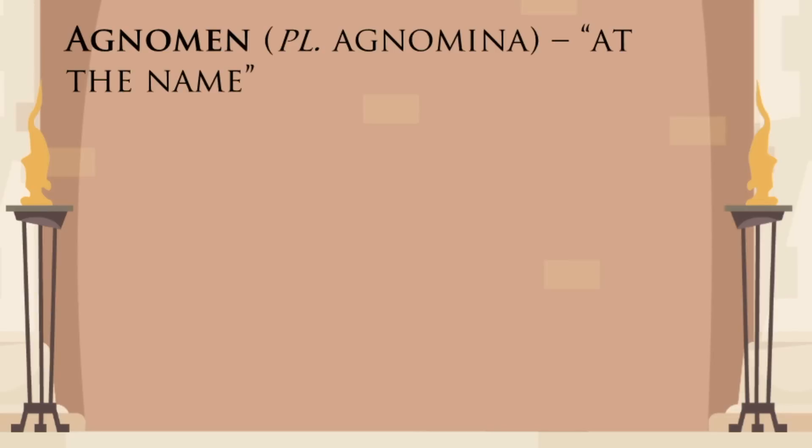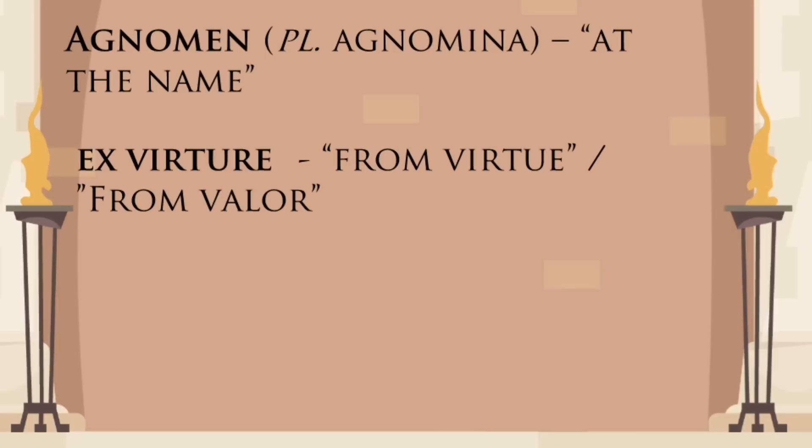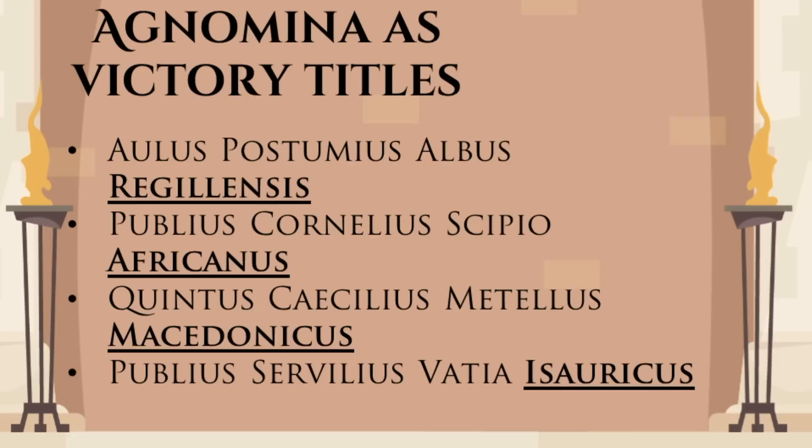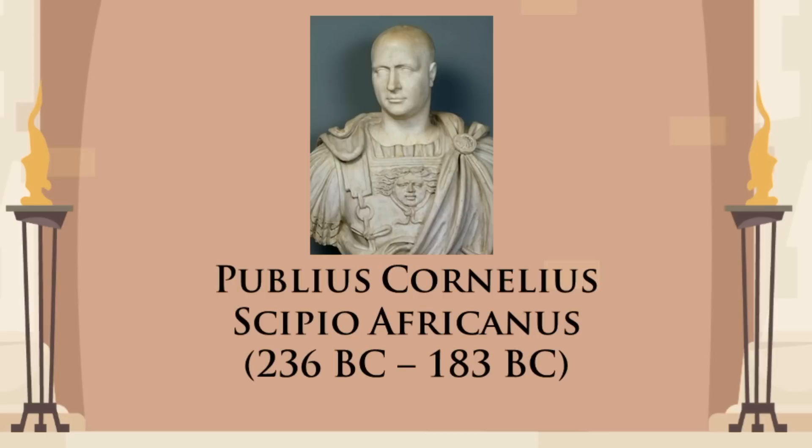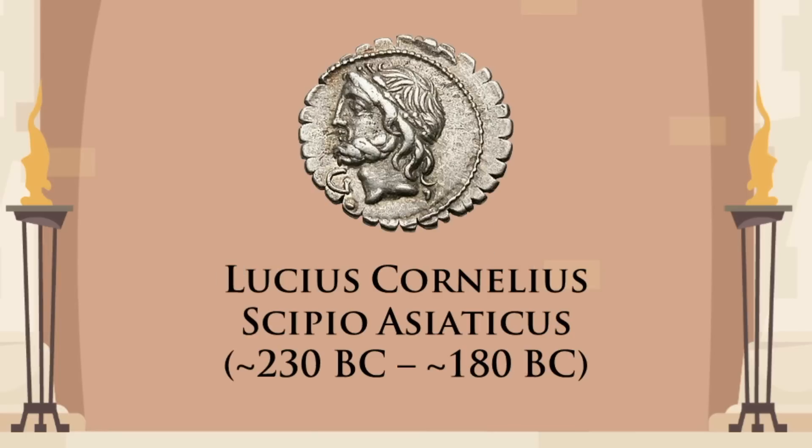A personal, non-hereditary cognomen is sometimes called agnomen. Most of those were the so-called cognomen ex virtute — personal honorifics awarded for great deeds. These titles were often given to generals for significant victories. The most famous victory title of the Roman Republic is certainly Africanus, the agnomen awarded to Publius Cornelius Scipio for his victory over Hannibal at the Battle of Zama. His younger brother Lucius, not to be outdone by the older sibling, earned himself the agnomen Asiaticus for his conquests in Asia Minor.